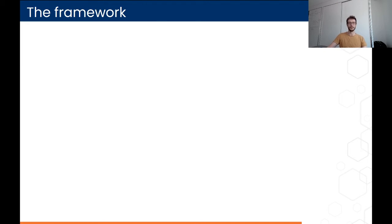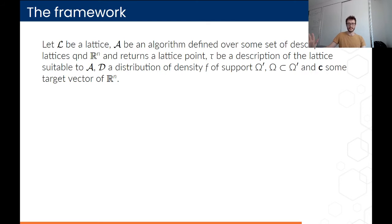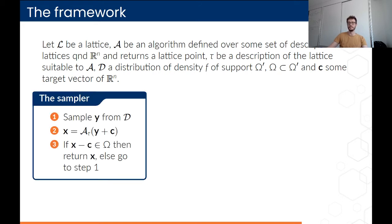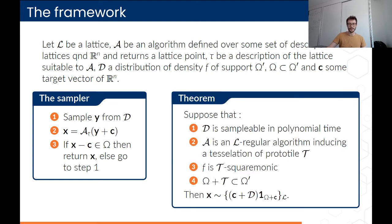Now to describe the framework properly. We have a lattice L, a regular algorithm A with description τ of L, a distribution D of density F defined on support ω', with ω ⊆ ω', and a target vector c in space. Sampling proceeds as follows: sample from the continuous distribution D to get y, round y to c using algorithm A to get a lattice point x, then reject x if x − c is not in ω. If the four listed conditions are verified, then x follows the distribution D translated by c and discretized on lattice L — exactly what we aimed for.